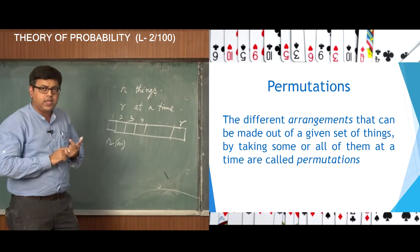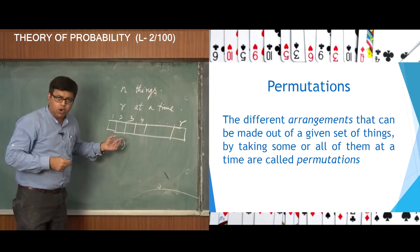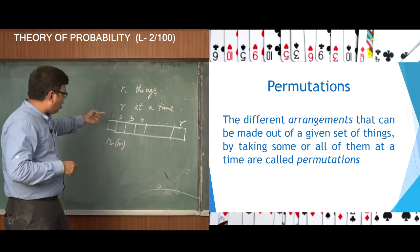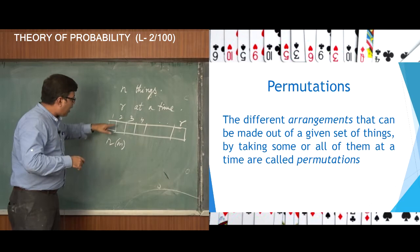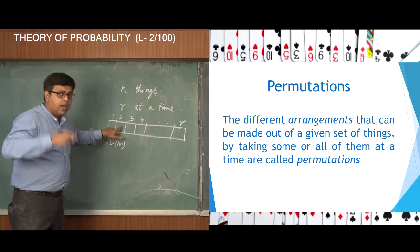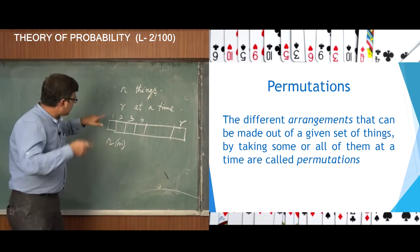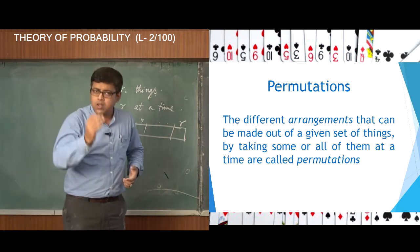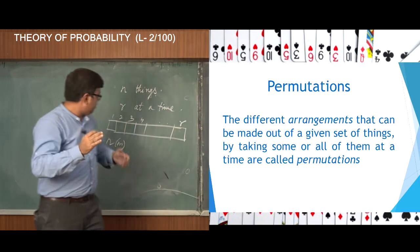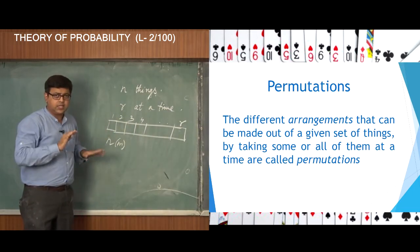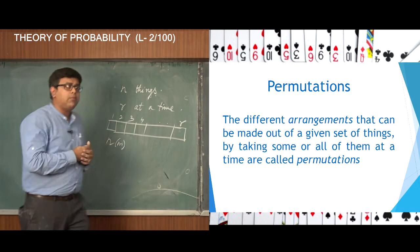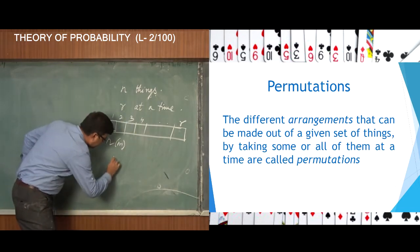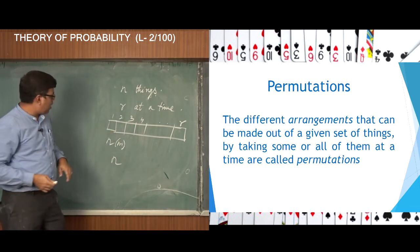I have n minus 1 things in my hand by which I can fill up the second box, so I can fill up the second box in n minus 1 ways. In how many ways can I fill up the first two boxes? Using the multiplication rule of the fundamental principle, the answer is n into n minus 1.